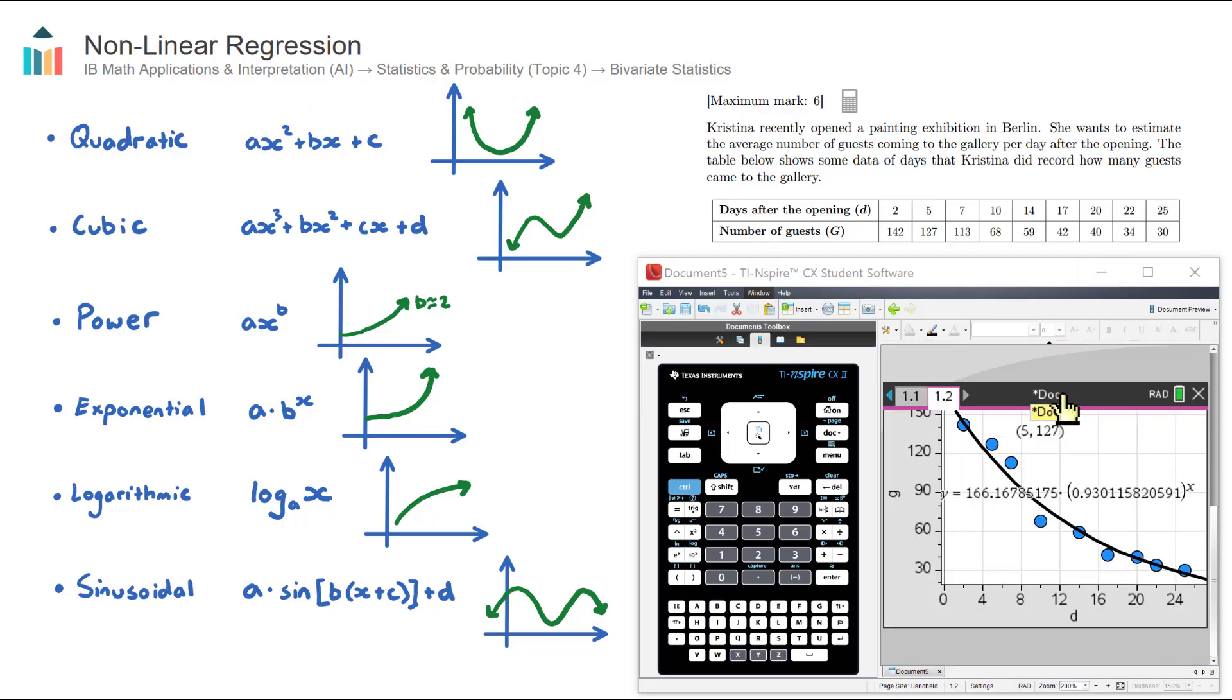Now, some more advanced non-linear regression IB exam questions will ask you to what's called linearize the data. Now, what that means is, in this question here, our data isn't quite linear. It kind of looks like it, but it sort of slopes away and then starts to flatten out. So we don't have a linear set of data. Now, we might be asked to use our knowledge of logarithms to actually make this data linear and then form a linear regression line, but it has a log inside it.